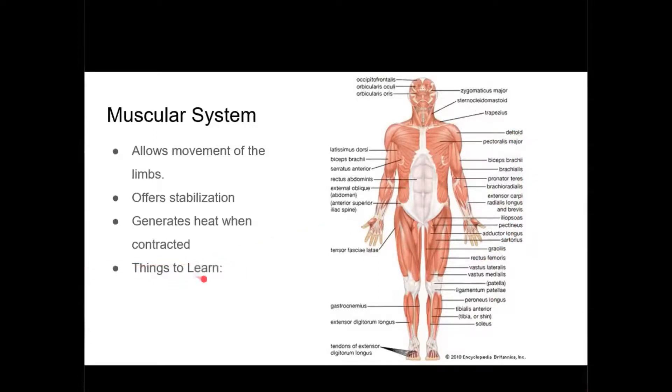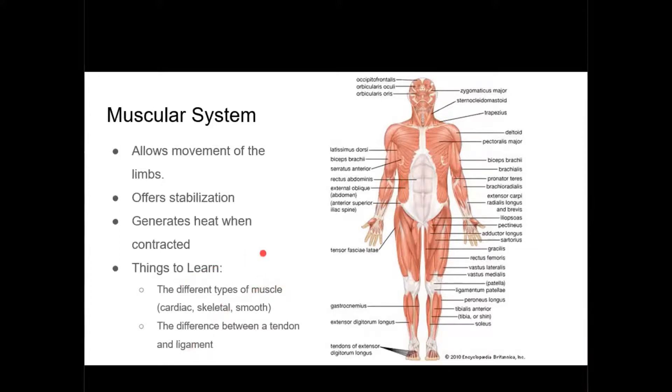Some key things you want to know are the different types of muscle: cardiac, skeletal, and smooth. Smooth is found in digestive and what they do. The difference between a tendon and a ligament. A tendon is muscle to muscle, while a ligament is muscle to bone.